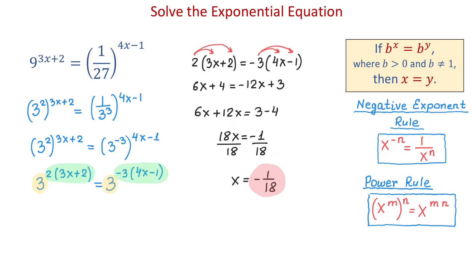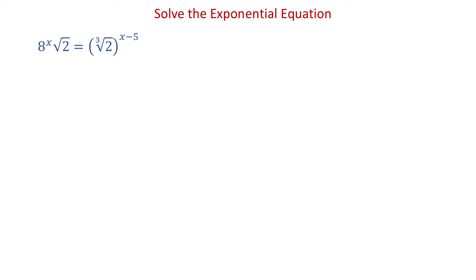Now let's solve the next exponential equation. Here we have 8 to the x power multiplied by square root of 2 equals cube root of 2 to the x minus 5. Inside each of these radicals we have the number 2, and notice that we can also write 8 as 2 cubed. So first, in place of 8 to the x power, we will write 2 cubed to the x power.